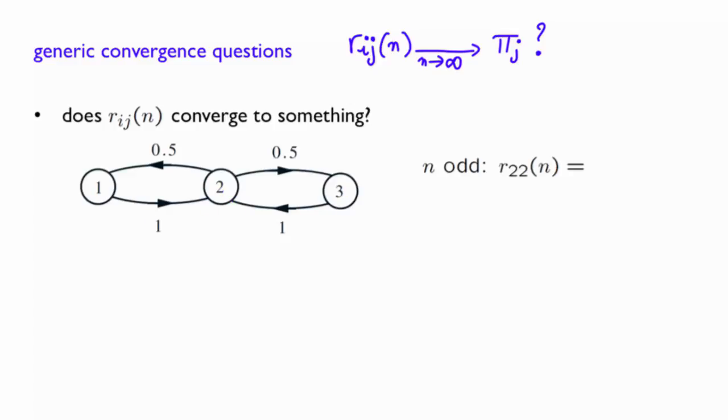In other words, for n odd, R22 of n will always be 0. And for n even, R22 of n will always be 1. And so R22 of n will never converge. It will always alternate between 1 or 0. Convergence has failed.